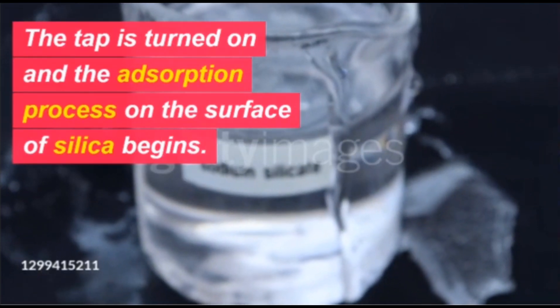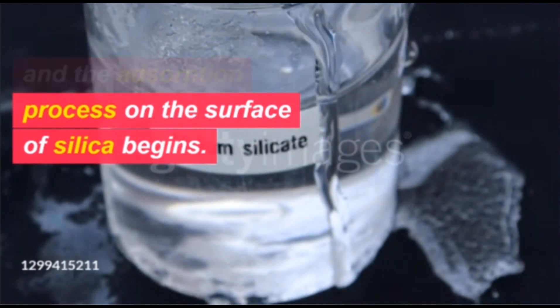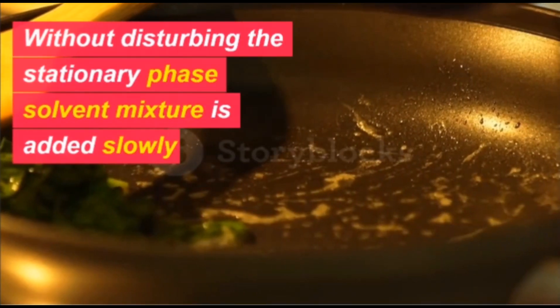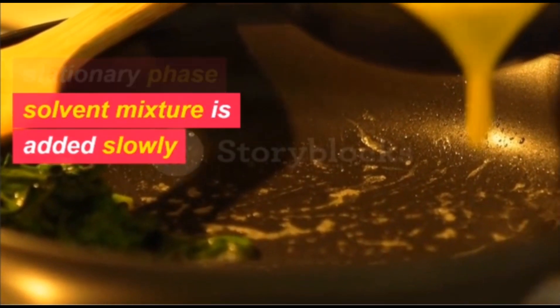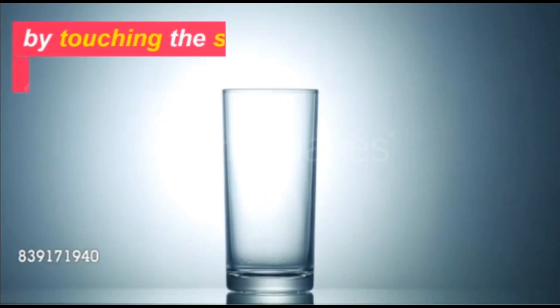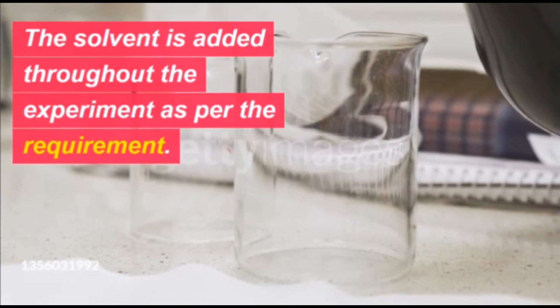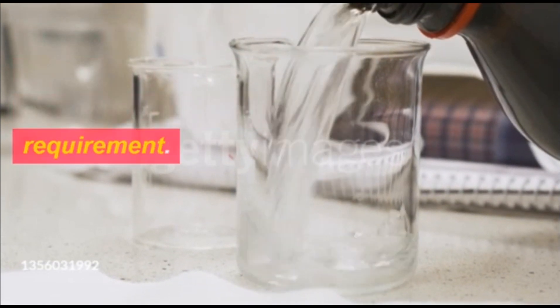The tap is turned on and the adsorption process on the surface of silica begins. Without disturbing the stationary phase, solvent mixture is added slowly by touching the sides of the glass column. The solvent is added throughout the experiment as per the requirement.